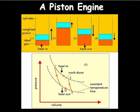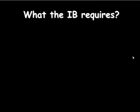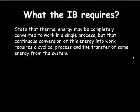This all means that with heat going out of the system and heat going into the system, some heat is going to be lost. This is not a perfectly efficient system because it's repeated time and time again. This is stated by the IB: what the IB requires is for you to state that thermal energy may be completely converted to work in a single process.